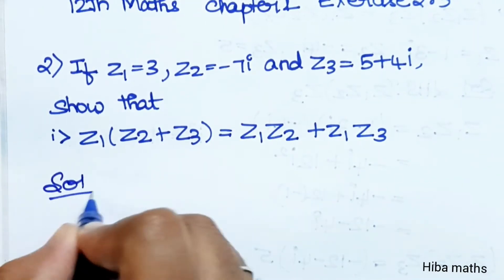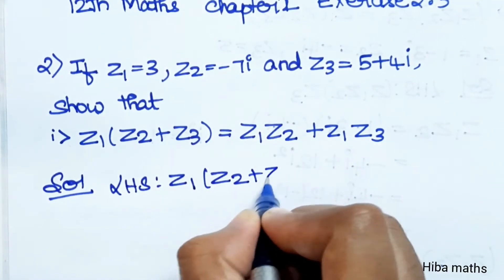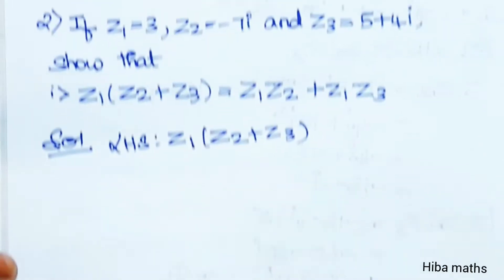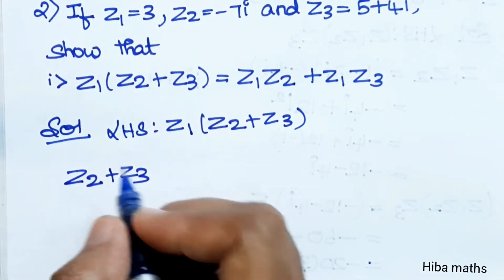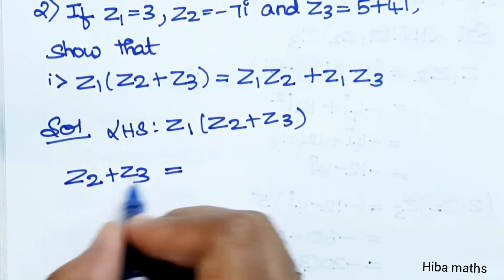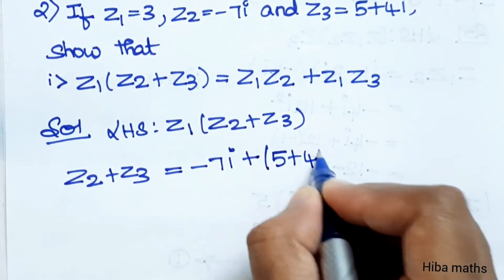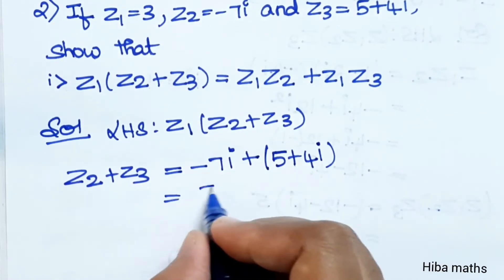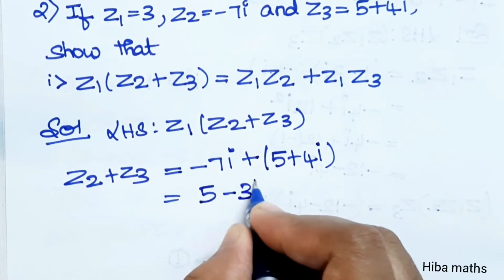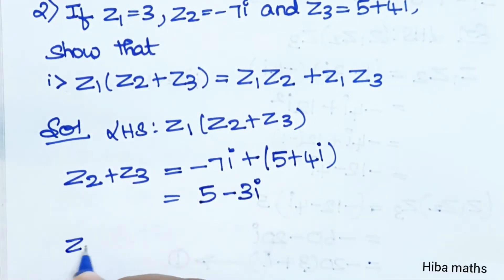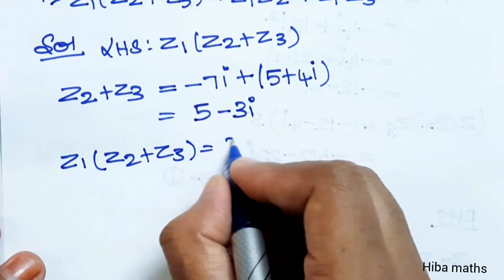LHS part: z1 into z2 plus z3. First compute z2 plus z3. z2 is minus 7i, plus z3 which is 5 plus 4i. Real number part is 5, imaginary part: plus 4i minus 7i gives minus 3i. So z2 plus z3 equals 5 minus 3i.